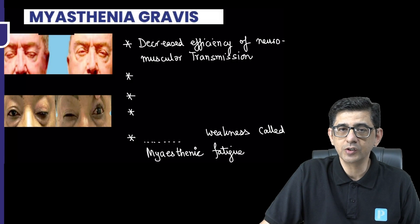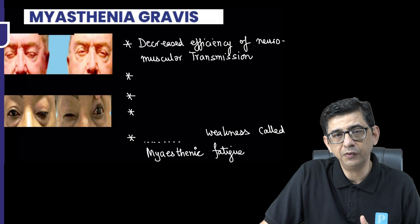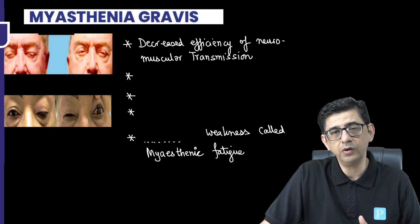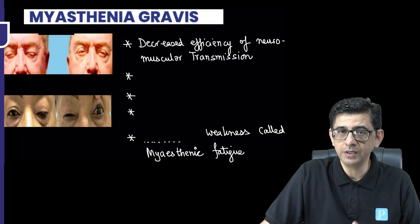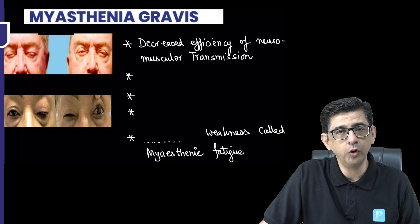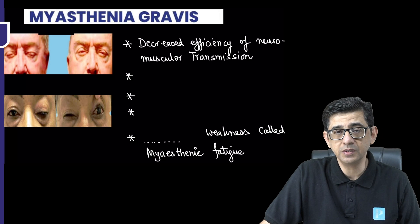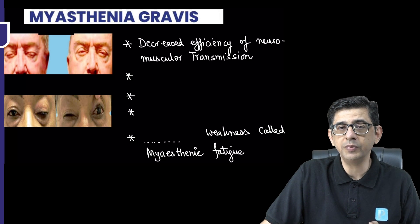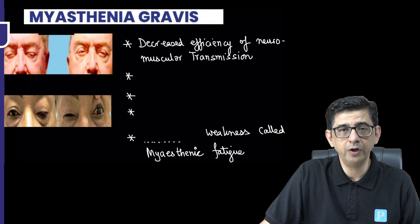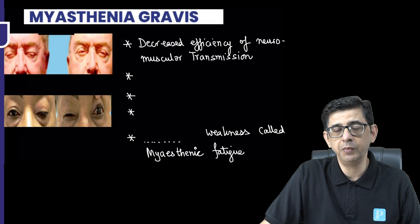Welcome back. The next topic we're studying is Myasthenia Gravis — an autoimmune disorder, type 2 hypersensitivity, a post-junctional disorder where antibodies to the acetylcholine receptor cause decreased efficiency of neuromuscular transmission. In this condition, extraocular muscles are involved rather early, and one of the classical early presentations is the development of ptosis and diplopia. I'll begin by describing two named eye signs seen in this condition.